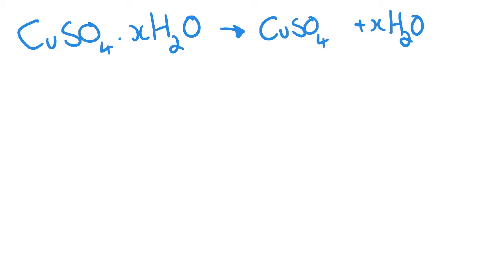Now let's say I start off with 250 grams of my hydrated salt, and after heating I have 160 grams of copper sulfate. I can then work out that if I started with 250 grams of both my copper sulfate and my water, then I must have lost 90 grams of water to get to this 160.